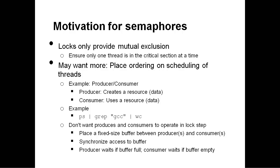In this example, a producer creates a resource or some kind of data, and the consumer then consumes that resource. A simple example of this is pipelines on the Unix command line. Suppose the pipeline shows the ps command, the grep command, and the wc command. In this case, the ps command produces output, and the grep command needs to wait for ps to produce it before it can consume that output. Similarly, the wc command has to wait for grep to produce output before it can run. So here we have an ordering problem where we need one program to run after another.